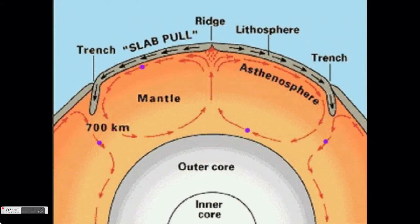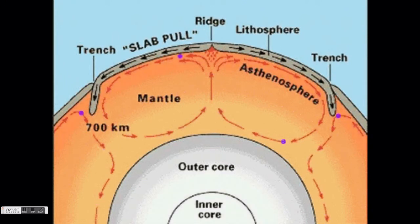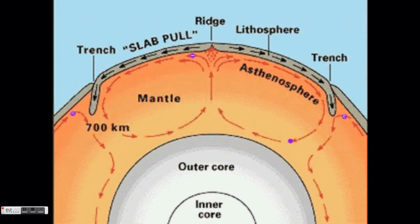As I said before, the solid tectonic plates float on top of the semi-liquid mantle. The mantle is liquid enough to flow and move around. The center of the earth is hotter, so the lower portions of the mantle are hot and the upper portions are cool.